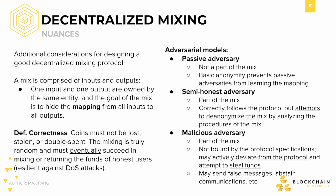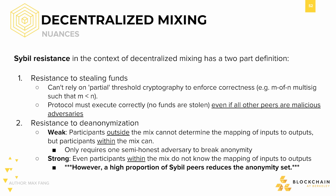We'll make another reference to some old concepts by introducing Sybil resistance. Because decentralized mixing is another distributed protocol, it's also susceptible to Sybil attacks. Hence, we need to ensure Sybil resistance, which has a two-part definition in the context of decentralized mixing. First, there needs to be a resistance to stealing funds — this means that we're not able to rely on partial threshold cryptography, such as M-of-N multi-signature transactions. Additionally, we need to maintain a resistance to de-anonymization. A weak definition is that participants outside the mix are not able to determine the mappings of inputs to outputs, but participants within still are. A strong definition is that even participants within the mix are not able to determine the mapping. However, a high proportion of Sybil peers will greatly reduce the anonymity set, as there are fewer unique entries within the mix.